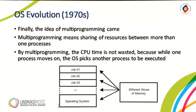Also in the 1970s, the idea of multiprogramming finally came. Multiprogramming means sharing of resources between more than one processor. By multiprogramming, the CPU time — CPU stands for Central Processing Unit — is not wasted, because while one process moves on, the OS picks another process to be executed. The overall memory is sliced into different parts named Job 1 through Job 3, with some parts reserved for the operating system. Each job is treated individually as one process.